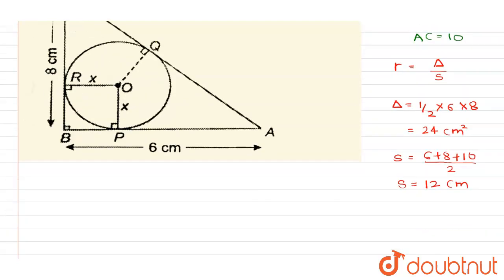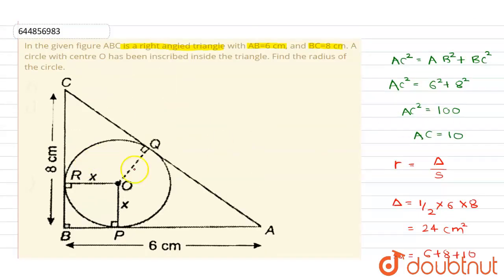This is our semi-perimeter. From this we can say that R, which is the inradius of the circle, will be equal to 2 cm, and this is our final answer.